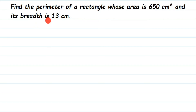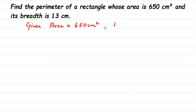Once we know the length, and breadth is already given in the question, we're going to find out the perimeter. So let's write down what we know from the question. Area of rectangle is equal to 650 centimeter square, and breadth b is equal to 13 centimeter. First we're going to find out the length.